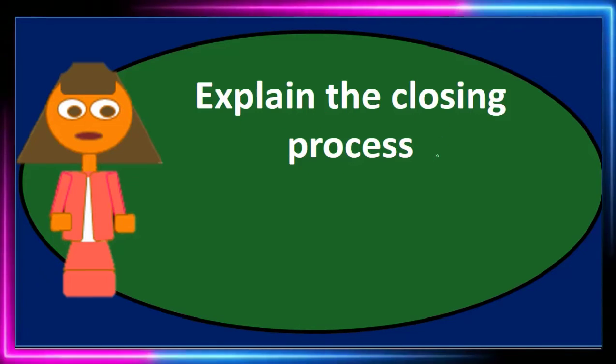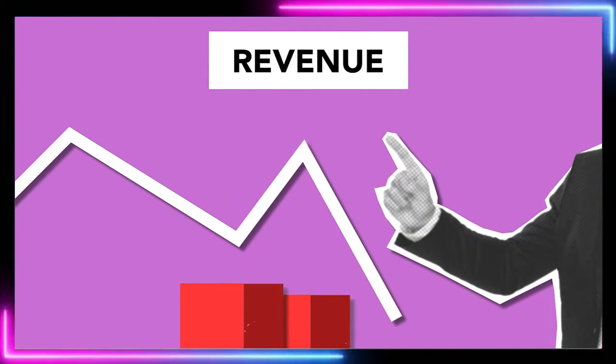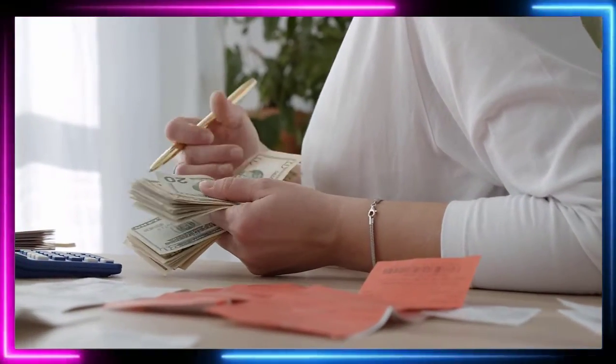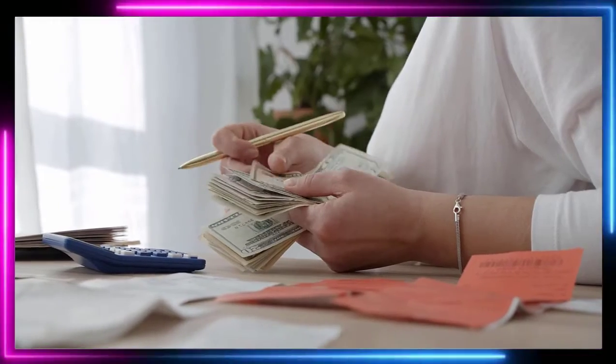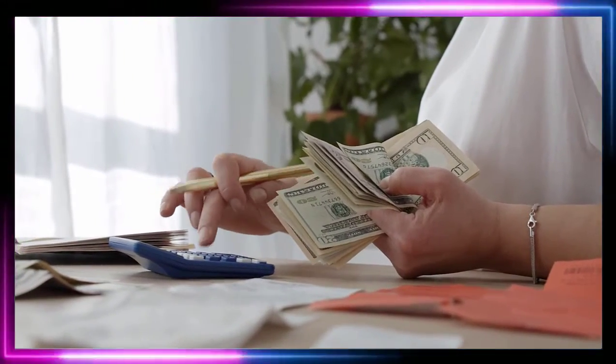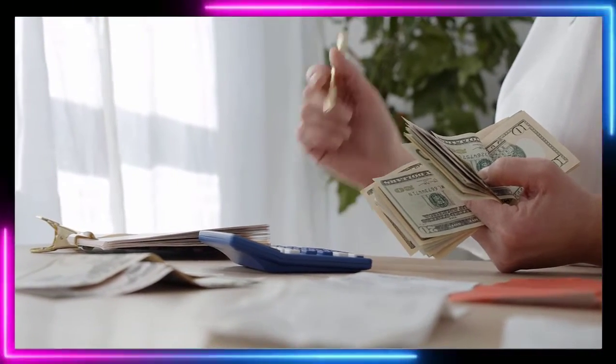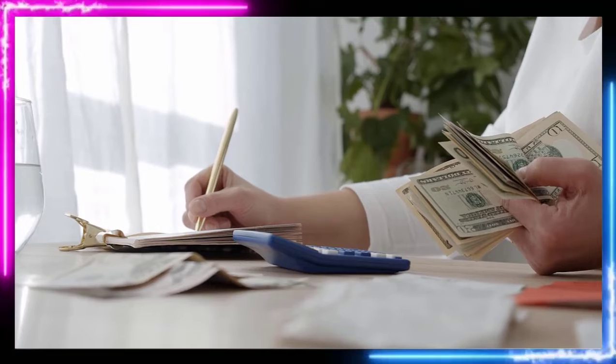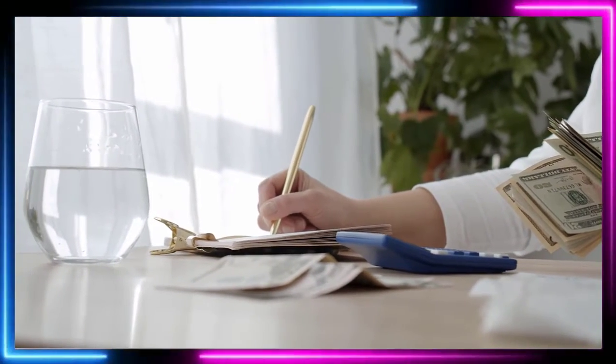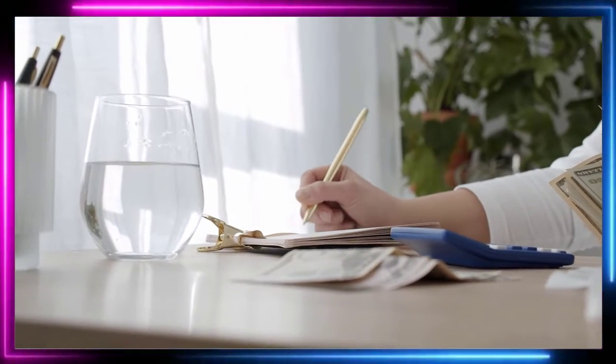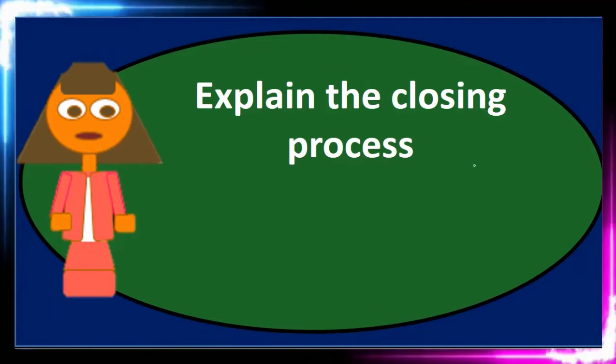And that would be step one, we're going to close out revenue to a clearing account called the income summary. Step two, we're going to close out the expense accounts to the clearing account of the income summary, resulting in all revenue and expense accounts being zero after that point in time, and the income summary account having an amount equivalent to net income, which was reported on the financial statements before this closing process. Then once we have the equivalent of net income and all zero balances in the temporary accounts of the income statement, all income statement temporary accounts.